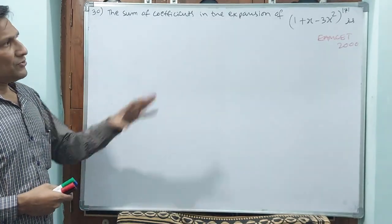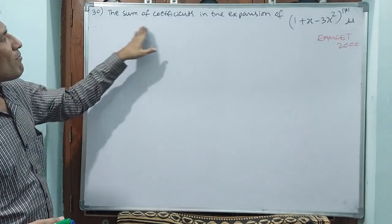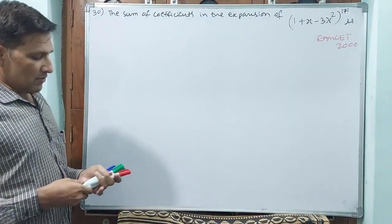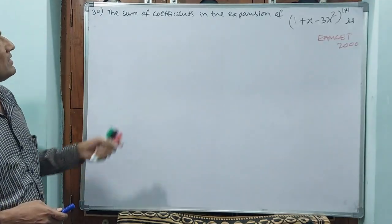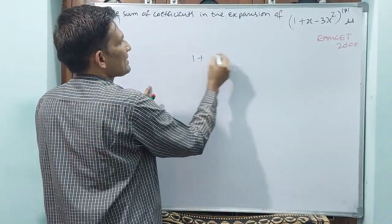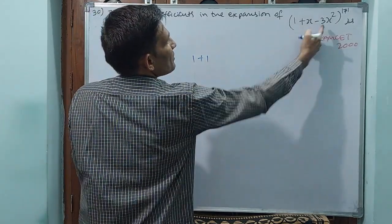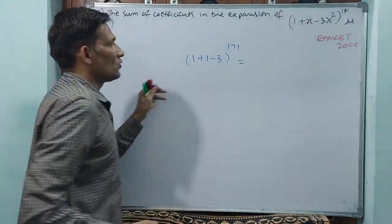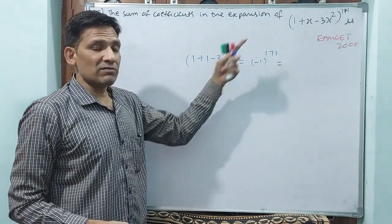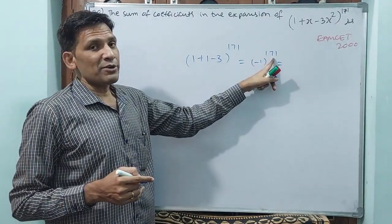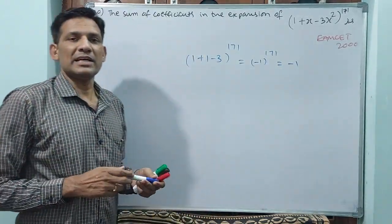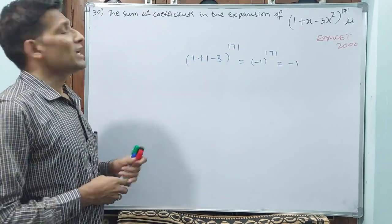Question number 30 — simple question, simple logic you have to apply. The sum of coefficients in the expansion of (1 + x − 3x²) to the power of 171 is asked. Sum of coefficients means we don't bother about x. Coefficient of 1 is 1, coefficient of x is 1, coefficient of x² is minus 3. So substitute x=1: 1 plus 1 minus 3 equals minus 1, power 171. Since 171 is odd, minus 1 to the power of 171 equals minus 1.